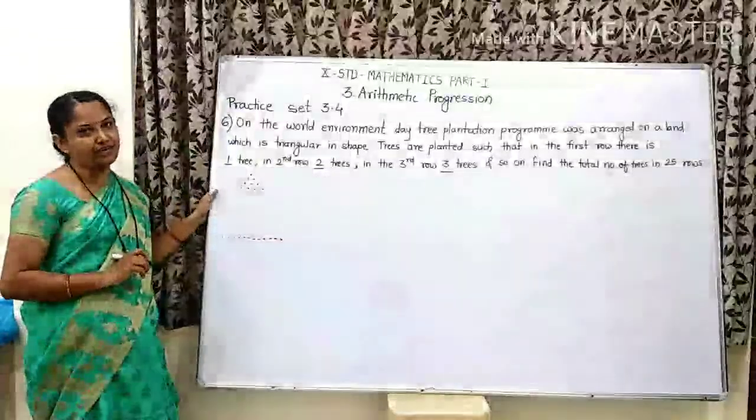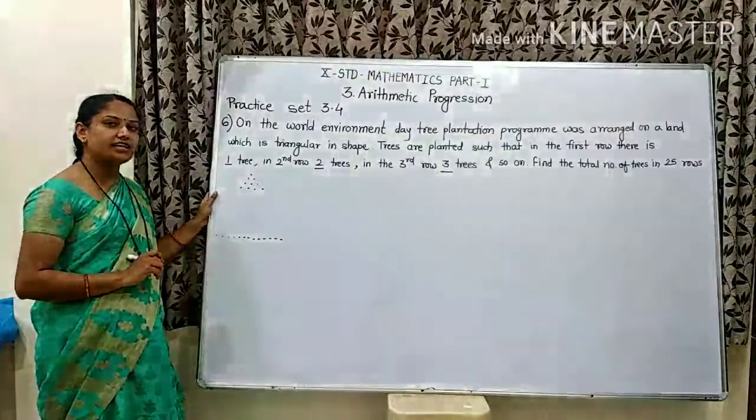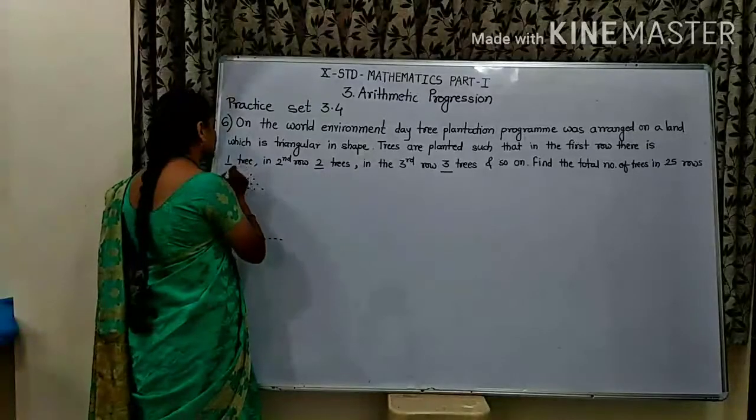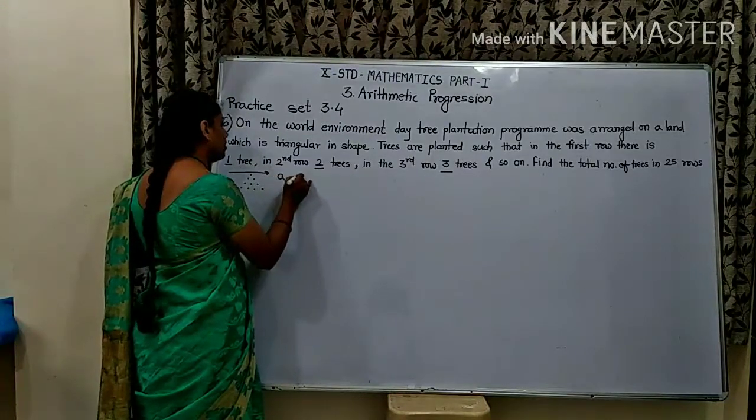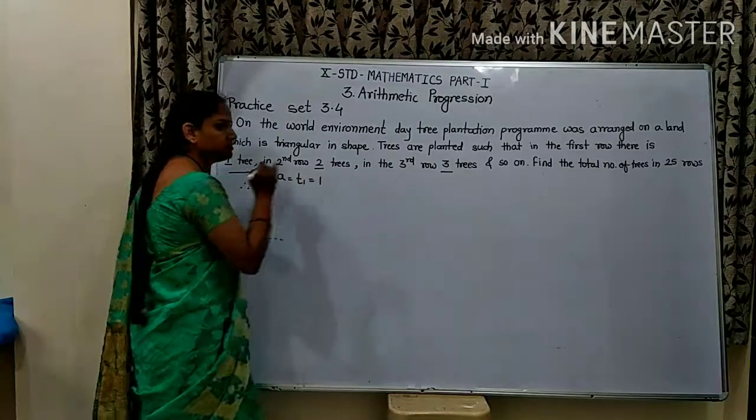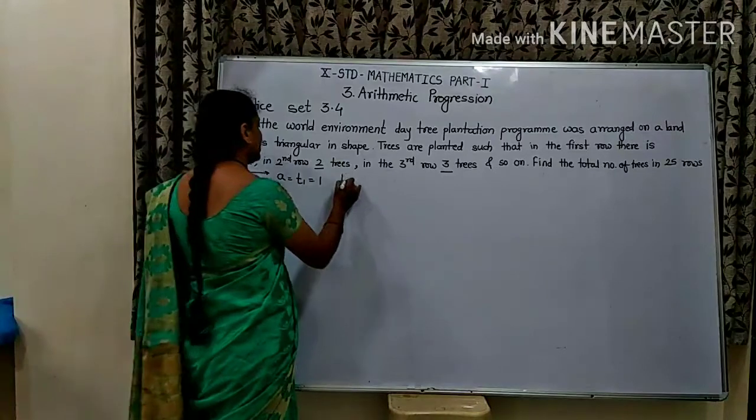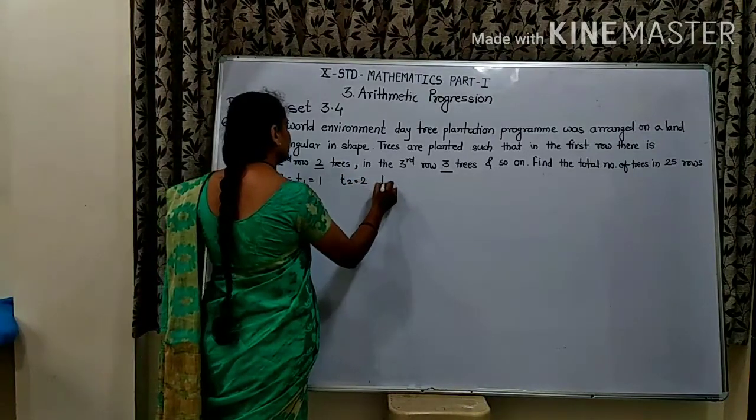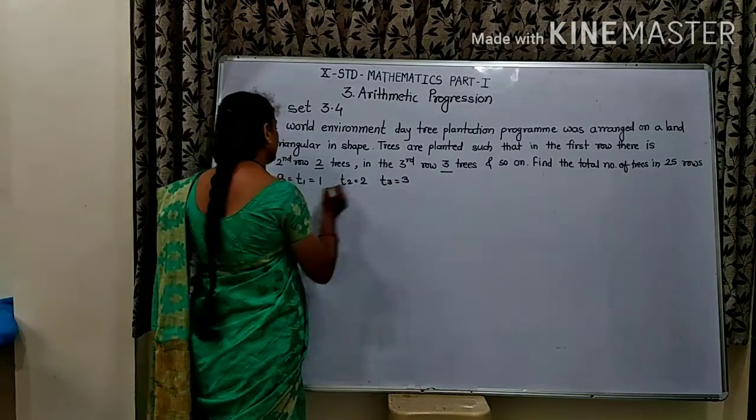Let's find the total number of trees. Now, the first term T1 is 1, T2 is 2, T3 is 3. Now we have to find out common difference.